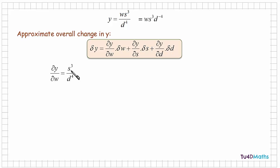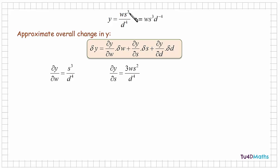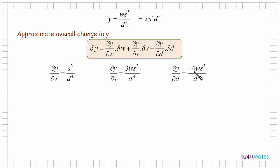So differentiating y with respect to w, keeping s and d constant, gives s to the power of 3 over d to the power of 4. Differentiating y with respect to s, keeping w and d constant, gives 3ws² over d to the power of 4. And differentiating y with respect to d, keeping w and s constant, gives minus 4 times w s to the power of 3 times d to the power of minus 5, which is 1 over d to the power of 5.